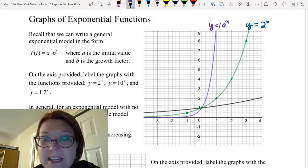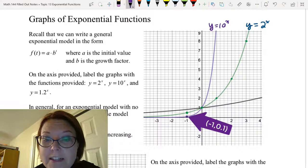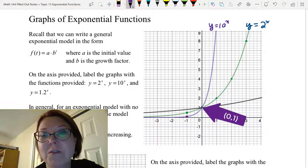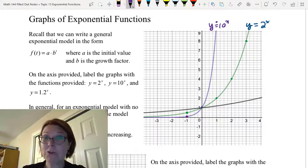This is y equals 10 to the x. Remember we had points at negative 1 point 1, 0 comma 1, and 1 comma 10, which would be technically off the coordinate axes, just a little bit.